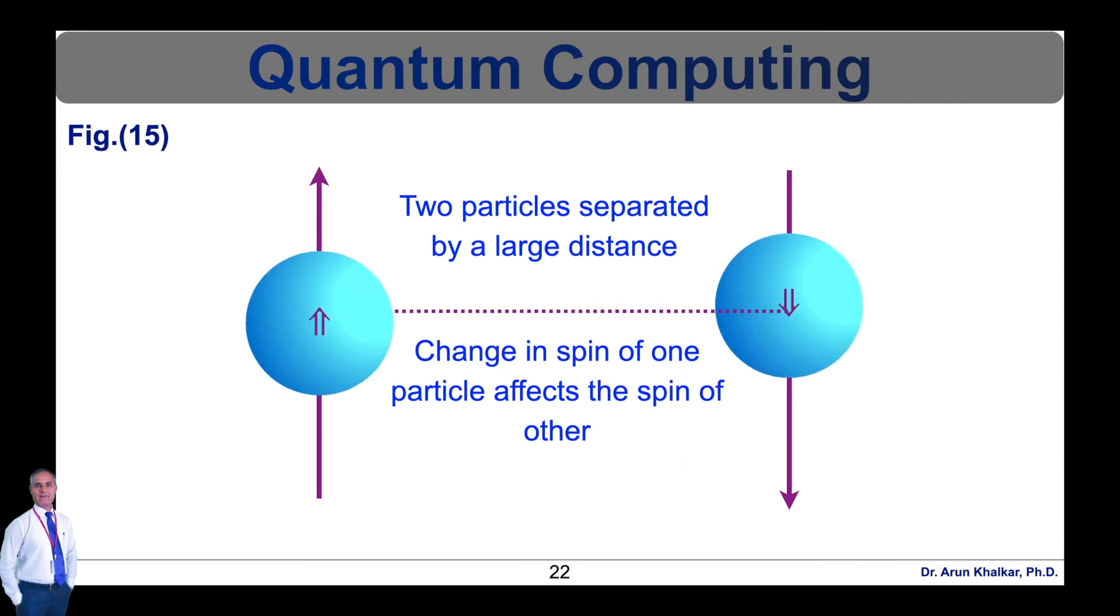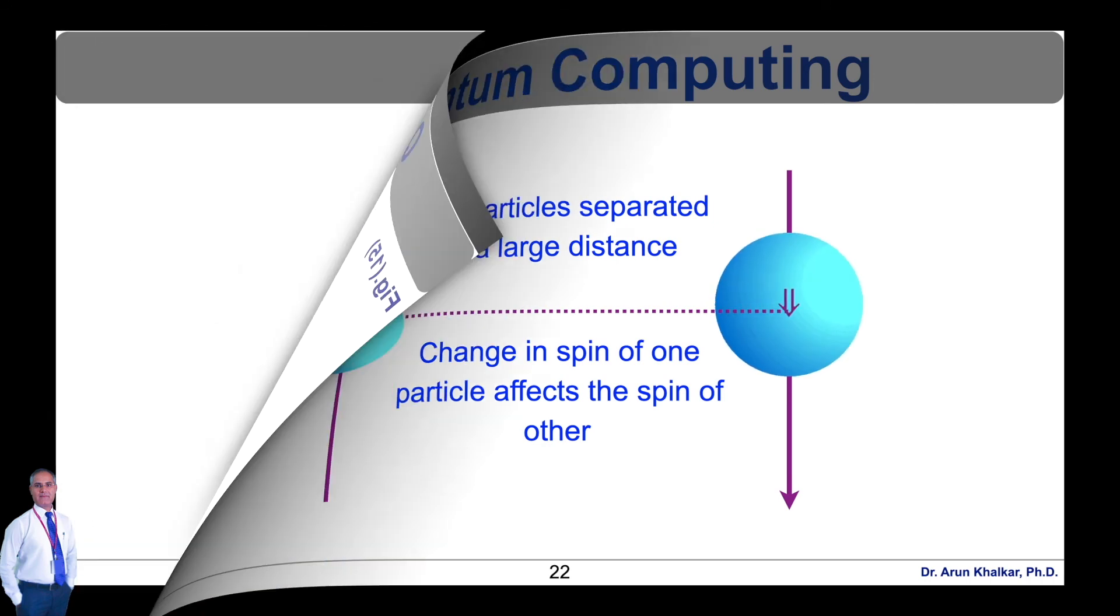Thus, large information is processed within a fraction of the time. So these two important parameters, that is superposition and entanglement, are very, very important in quantum computing to process very high operations in a fraction of seconds.